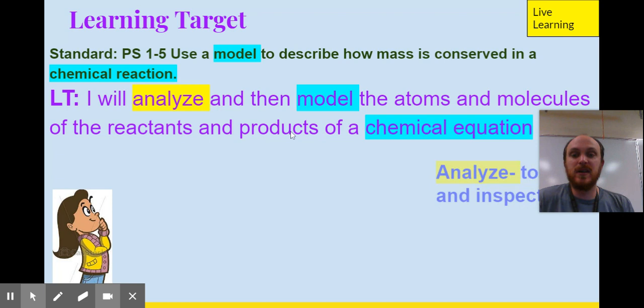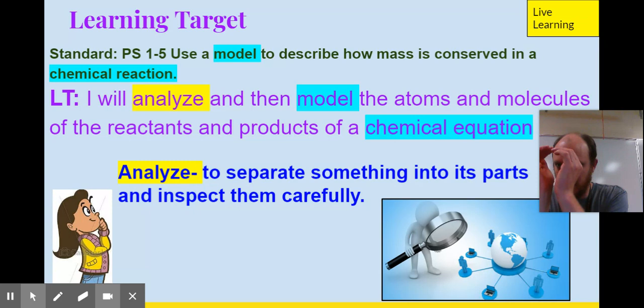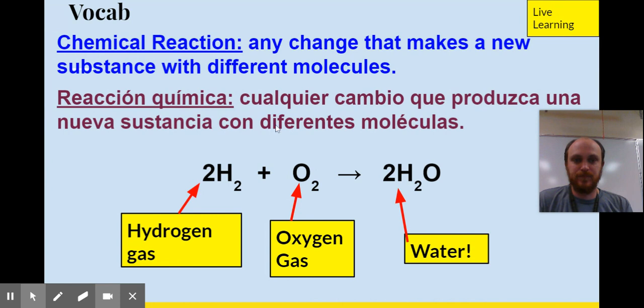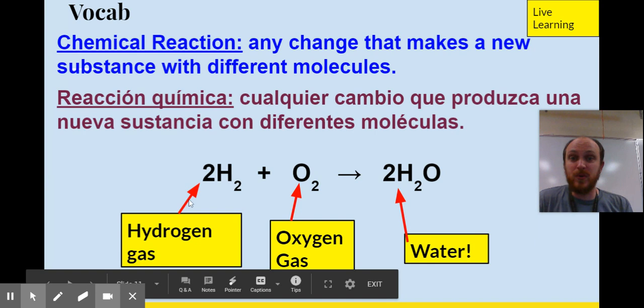When I say to analyze, I mean, you're going to look at all of the parts of something. So I'm going to give you this big, long chemical equation. You're going to have to look at one piece at a time and say, okay, what is this piece mean? Now what does this piece mean? Now what is this? You'll see what I mean in a minute. So here is our chemical equation from the do now. Any chemical reaction is a change that makes a new substance. So H2 is hydrogen gas. O2 is oxygen gas.